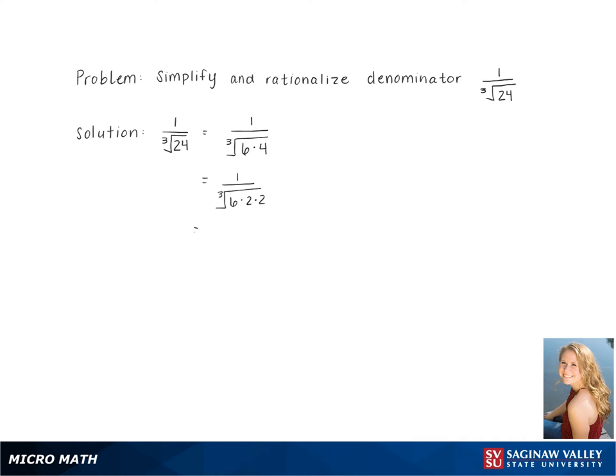Breaking it down even further, we get 1 over the cube root of 3 times 2 times 2 times 2, giving us the 2 to pull out.